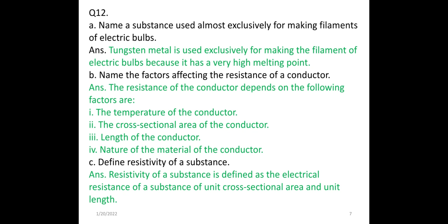Define resistivity of a substance. Resistivity of a substance is defined as the electrical resistance of a substance of unit cross-sectional area and unit length. When the resistance of a substance is 1, the thickness is 1 m² and the length is 1 metre, it is said to be the resistivity of the substance.